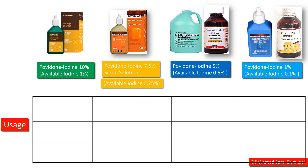Usage of povidone iodine 10%: it is used as a preoperative skin antisepsis. This is the most common concentration used for skin preparation before surgeries, including caesarean section. It can also be used to clean wounds and minor cuts to prevent infection. It's used on mucosal surfaces with caution, but the contact time should be shorter to avoid irritation.